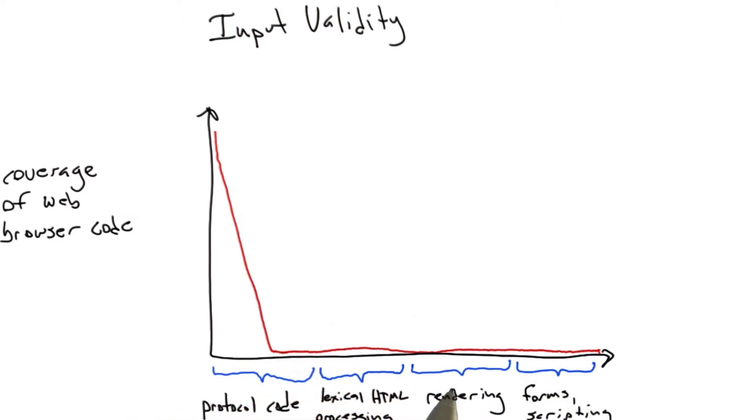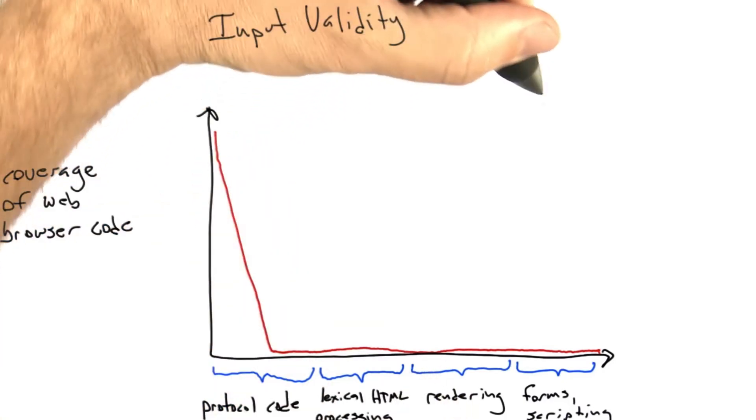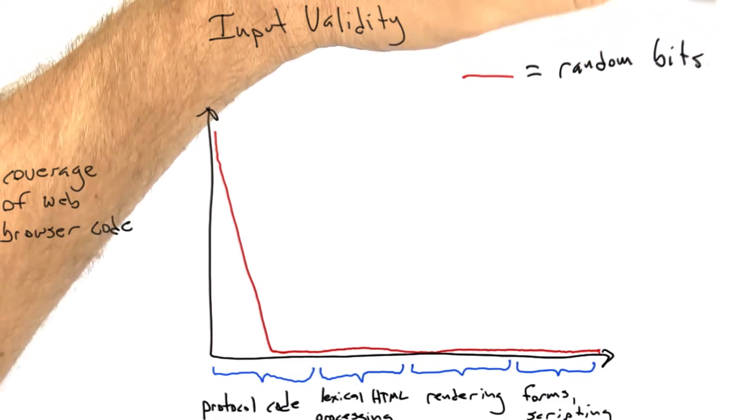And random testing is perfectly good at that. But on the other hand, if what we're interested in is sort of broad coverage of the software under test, then we're going to fail. So the red color indicates random bits.